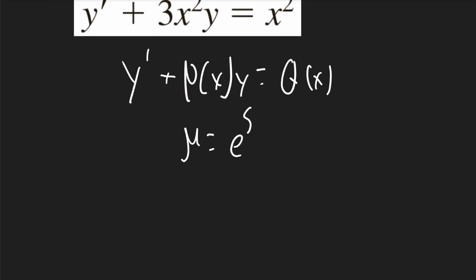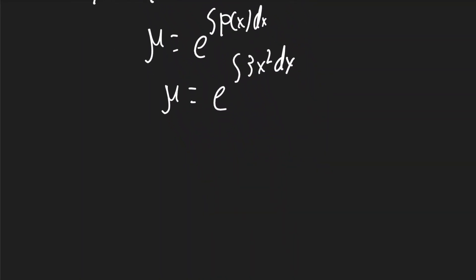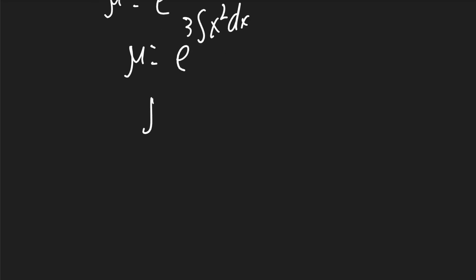Mu is going to be e to the integral of p of x dx. Mu is going to be e to the integral. The p of x is this 3x squared term. I'll write that up there. I can take that 3 out, so it'll be e to the 3 times the integral of x squared dx. So mu is going to be equal to e to the 3 times 1 third x cubed. So mu is going to be e to the x cubed.